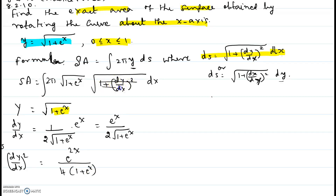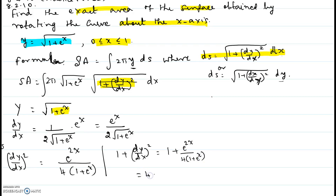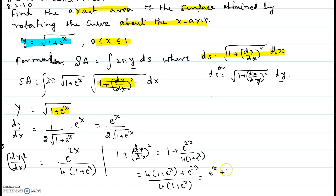The expression inside the radical, 1 plus (dy/dx)², equals 1 plus e to the 2x divided by 4 times (1 plus e to the x). Simplifying, that is 4(1 plus e to the x) plus e to the 2x, all divided by 4 times (1 plus e to the x), which factors as (e to the x plus 2)² divided by 4 times (1 plus e to the x).